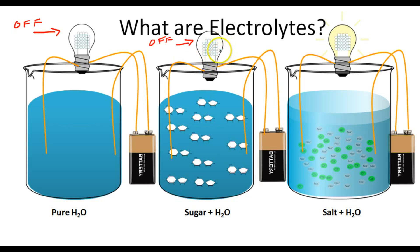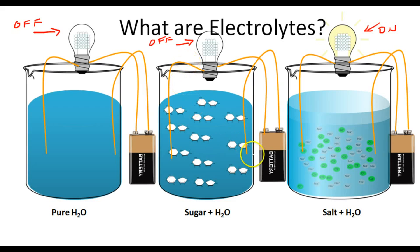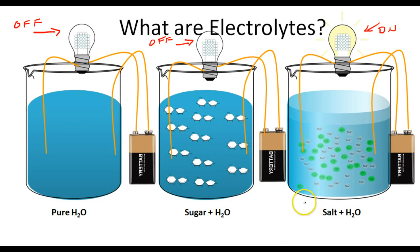This pure H₂O and this sugar water are not conducting an electric current, and therefore they're not going to allow this light bulb to glow. However, over here we notice that the light bulb is pretty bright — it's been turned on. Why is this solution conducting an electric current? In order for a solution to be electrolytic in nature, it has to have free-floating positive and negative ions to allow electrons traveling down this wire to propagate through this solution and into this wire, and eventually turn on this light bulb.